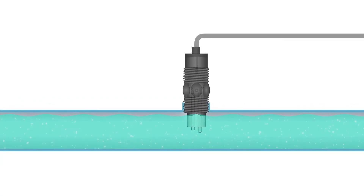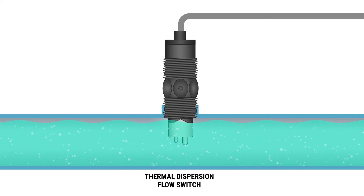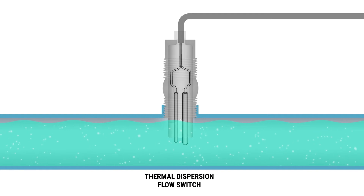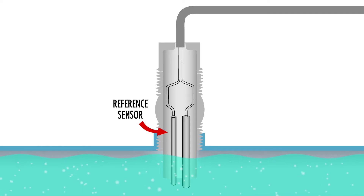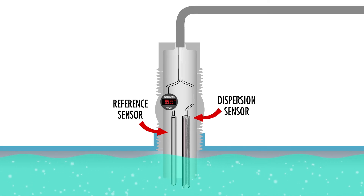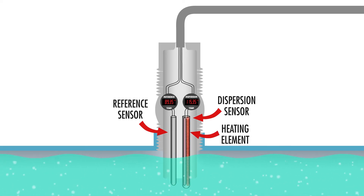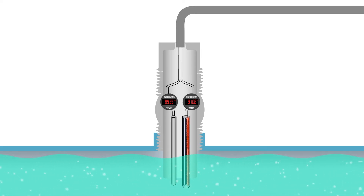Now let's look at a thermal dispersion flow switch. This solid state flow switch operates on the principle of heat transfer. A thermal dispersion flow switch consists of two temperature sensors. One sensor is the reference and measures the temperature of the media where the flow switch is immersed. The second temperature sensor is placed near a built-in heating element. As the flow rate of the media increases, it has a cooling effect on the heated sensor — the more the flow, the more the sensor is cooled.